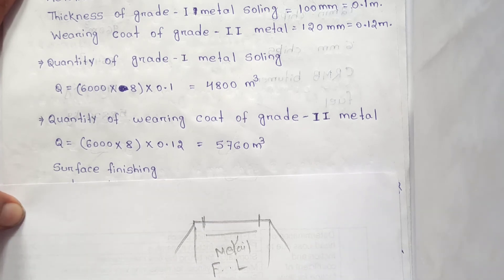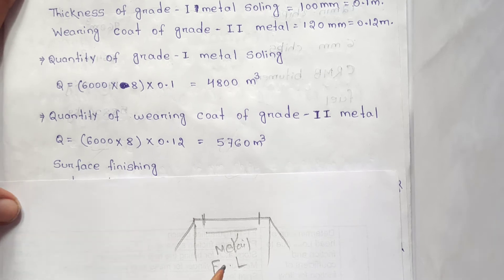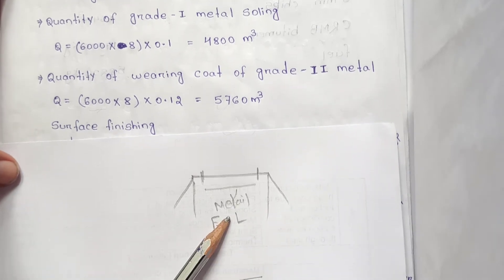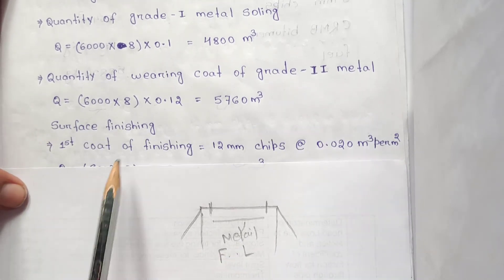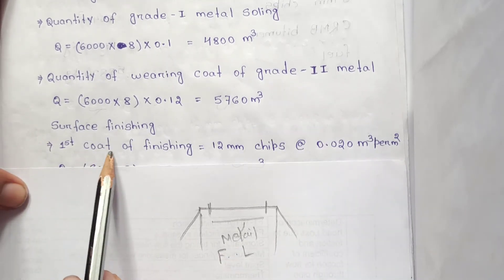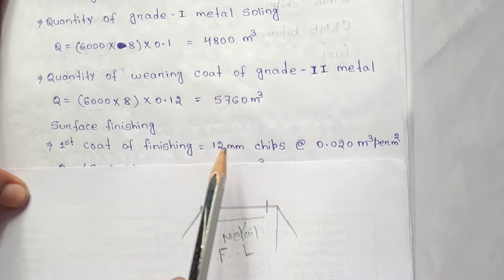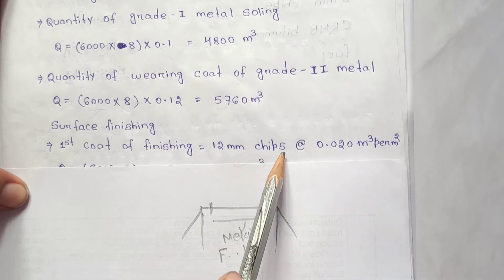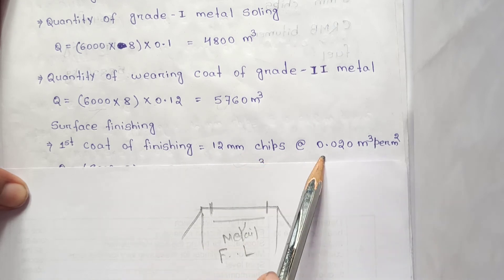For surface finishing, the upper detail is calculated. First coat of finishing: 0.020 m³ per m² applied over the surface area.